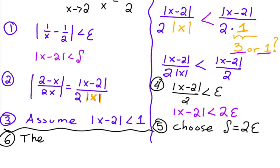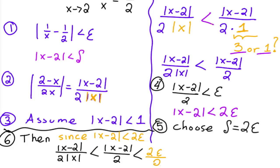then what we have is x minus 2 over 2 times absolute value of x, which is less than x minus 2 over 2 is less than delta or 2 epsilon. Then this guy is less than 2 epsilon over 2, which is equal to epsilon. And that's it.